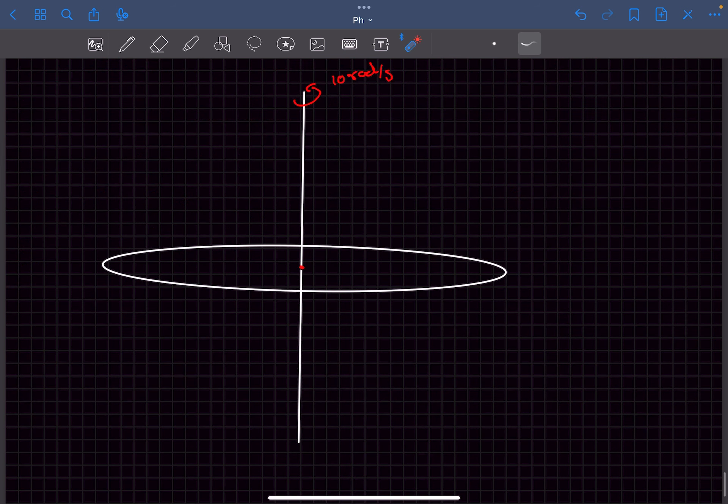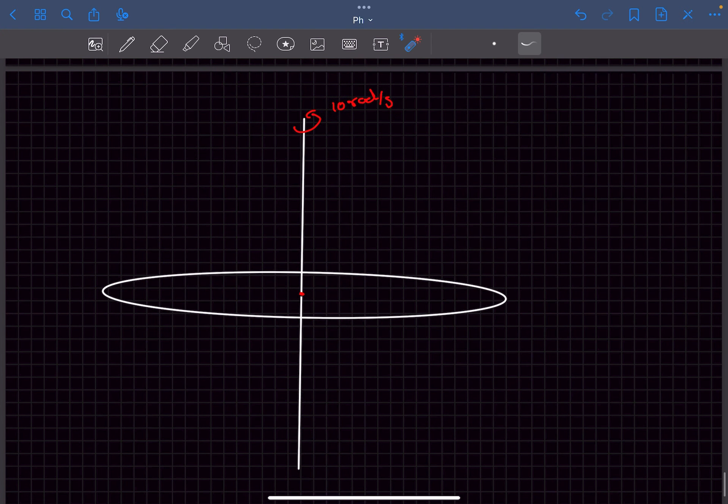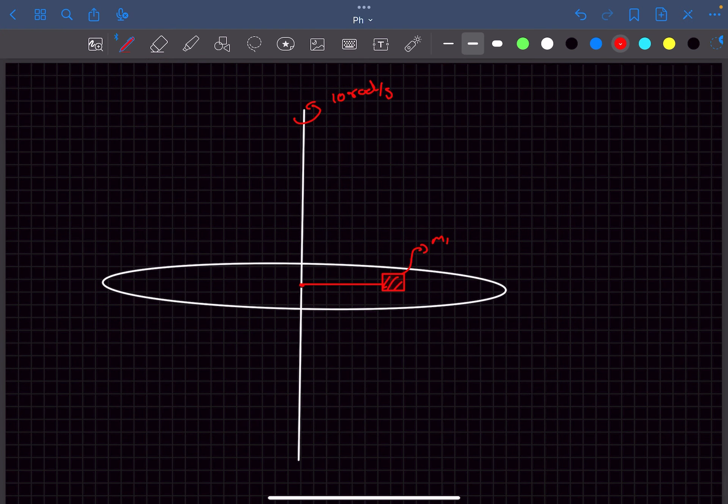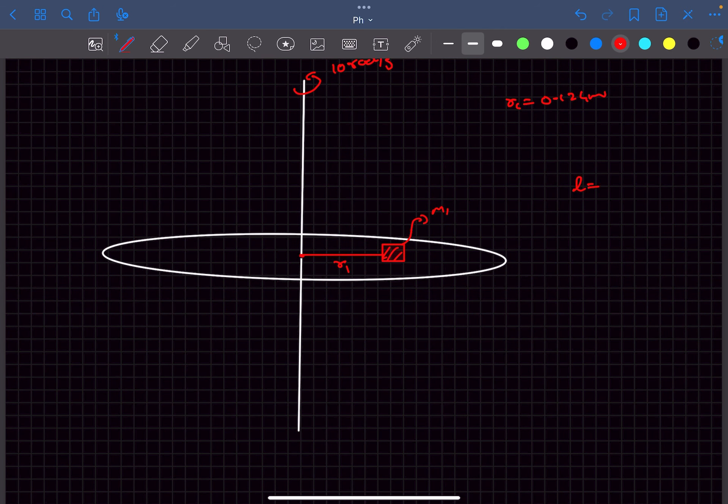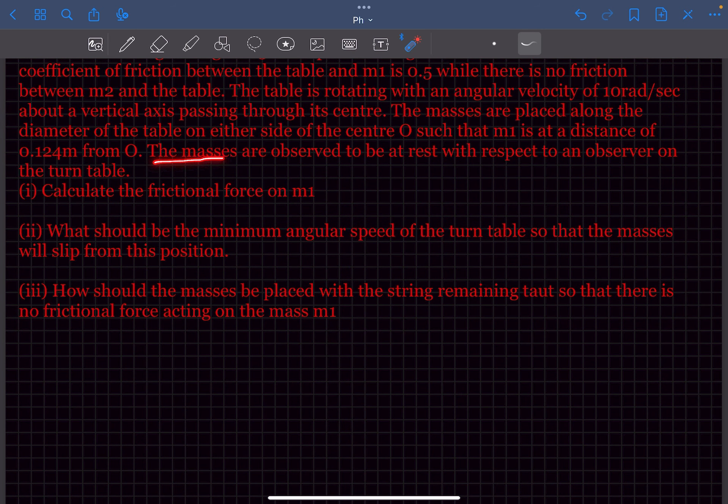Calculate the frictional force on m1. So the situation is something like this. This disc is rotating with an angular velocity of 10 radians per second. So the mass m1, let's call the distance from the axis r1. So r1 is given to be 0.124 meters. Now as the length of the string is 0.3 meters, the block m2 will be at a distance of r2 equal to l minus r1 which is 0.176 meters.